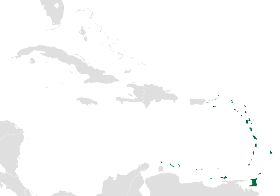The Windward Islands are so called because they were more windward to sailing ships arriving in the New World than the Leeward Islands, given that the prevailing trade winds blow east to west. The trans-Atlantic currents and winds that provided the fastest route across the ocean brought these ships to the rough dividing line between the Windward and Leeward Islands.